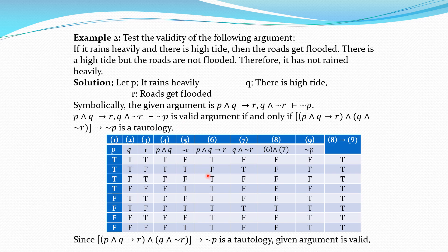The columns of the truth table are: P, Q, R, then P ∧ Q, ¬R, P ∧ Q → R, Q ∧ ¬R, the conjunction of columns 6 and 7, ¬P as the conclusion, and finally column 8 → column 9. In the last column we get all true values after preparing the truth table, meaning it is a tautology. Hence the given argument is valid. Even though the truth table method is very easy since making a truth table is straightforward, the main limitation is that if there are only two or three variables the table has four or eight rows respectively.